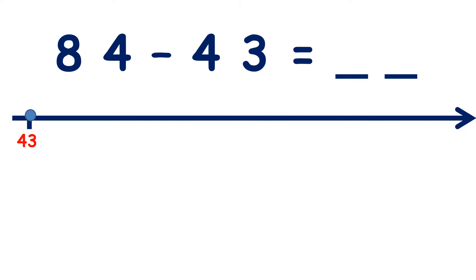We can find the difference by adding tens and then adding units. So we have 84 subtract 43. If we start on 43, we're going to count on until we get to 84.